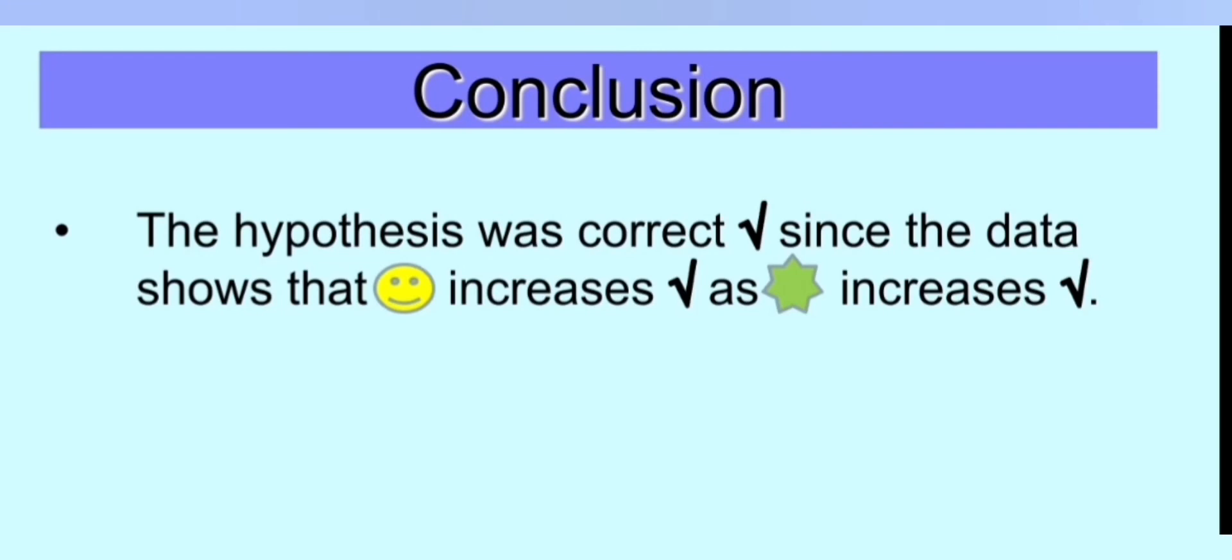Using the data from your table and your graph then you're going to look back at your hypothesis, the prediction that you made before you did the experiment, and then you decide was your hypothesis correct or incorrect. And then write your conclusion in which you say the hypothesis was correct or incorrect, either way. And then saying since the data shows that the one thing increased or decreased as the other thing increased or decreased.